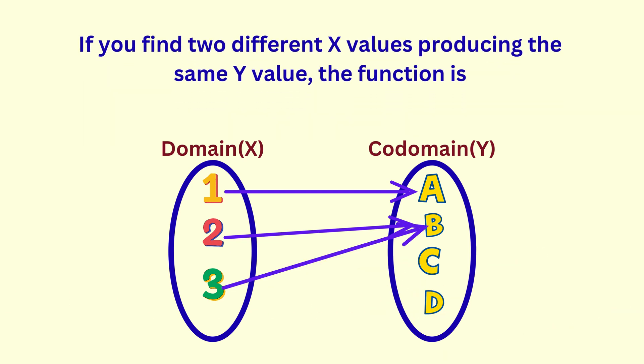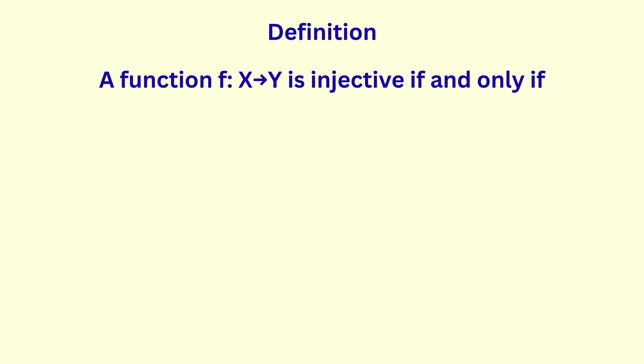Another key thing to note is that if you find two different X functions giving the same Y value, the function fails the one-to-one test and is not injective. So, we say in an injective or one-to-one function, if f of a is equal to f of b, then a is equal to b.